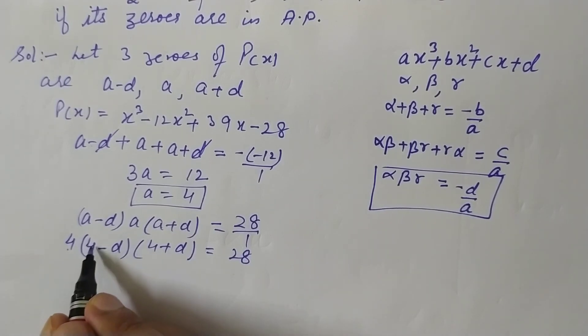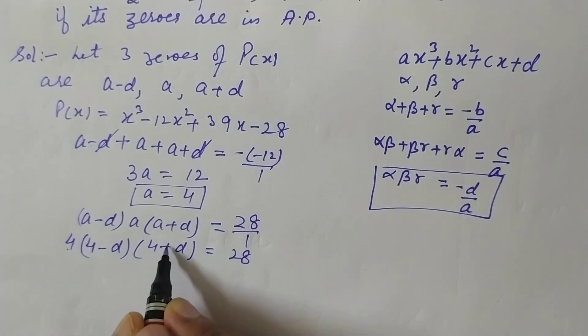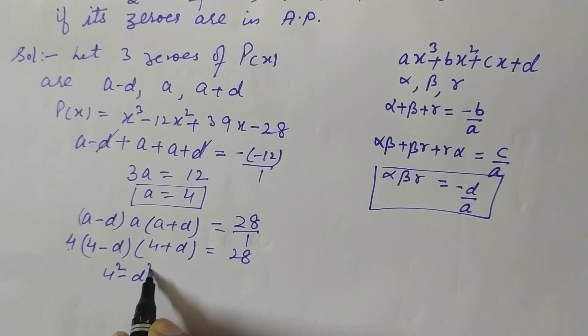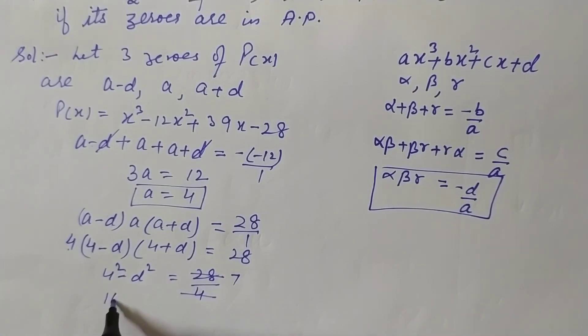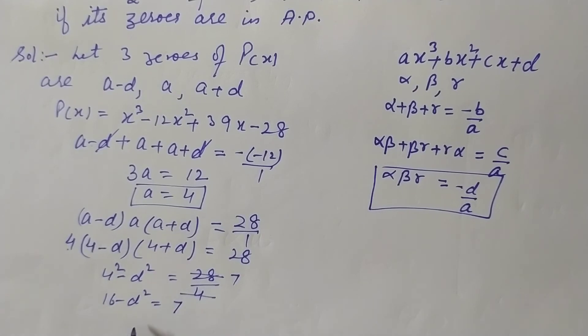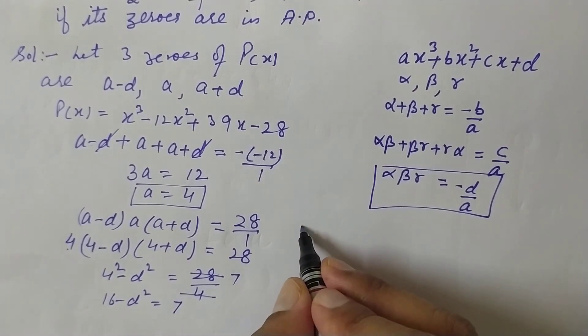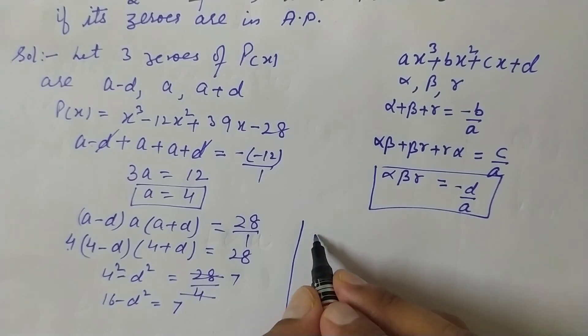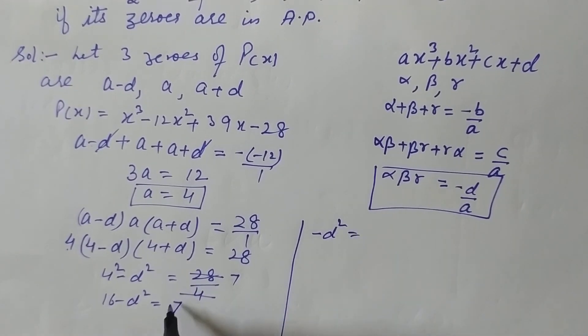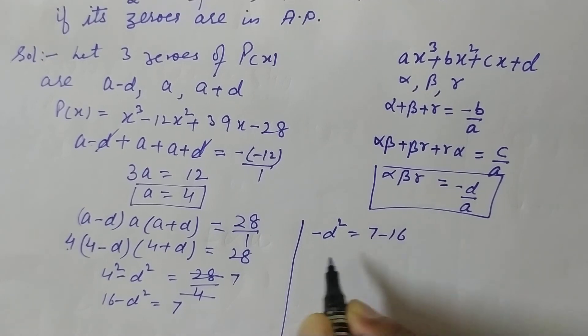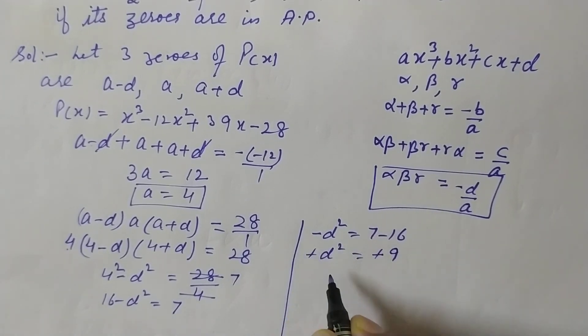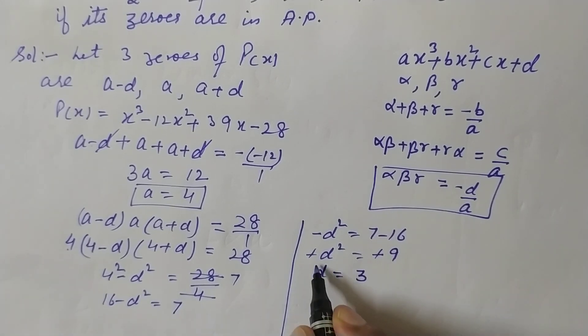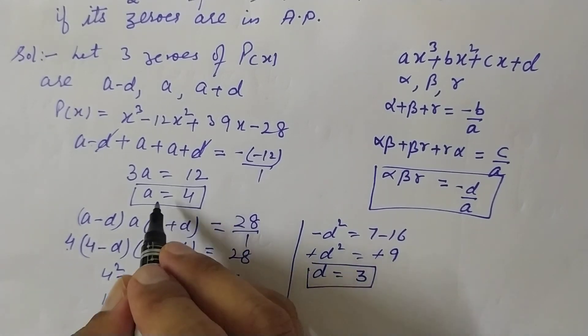So 16 - d² = 28/4. That's 4 × 7. So 16 - d² = 7. Now -d² = 7 - 16 = -9. So minus minus cancelled, and d² = 9, so d = 3. Here d is 3 and a is 4.